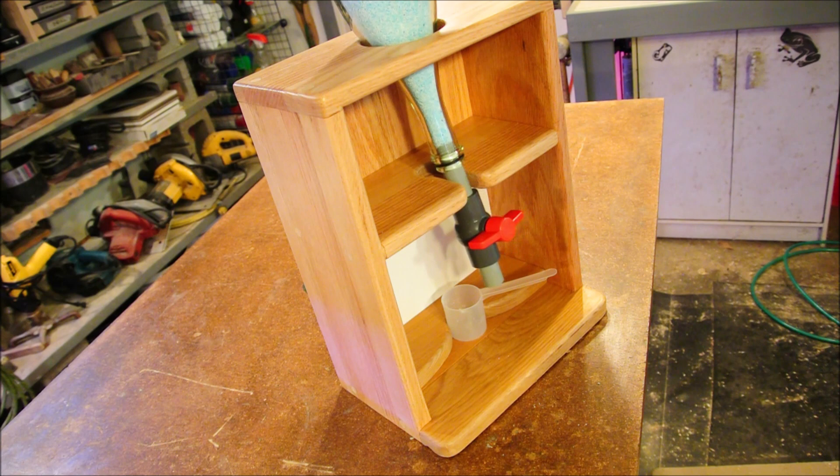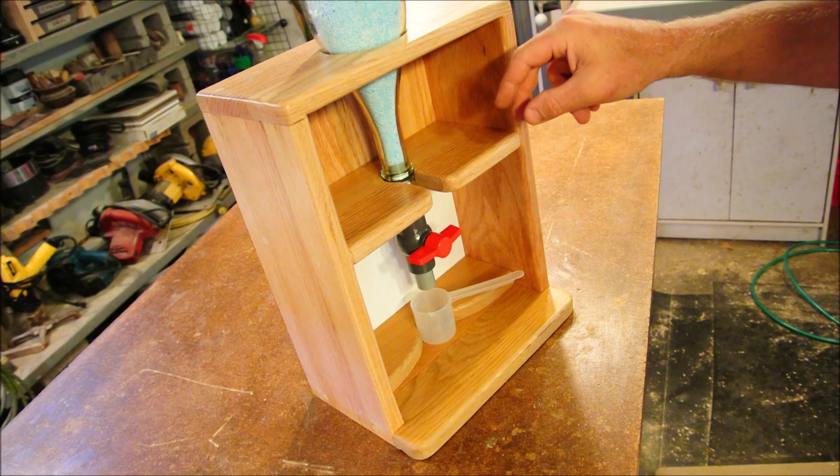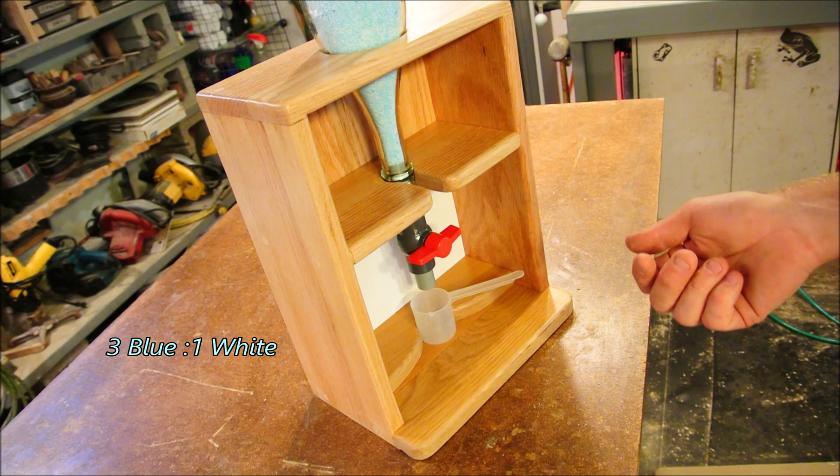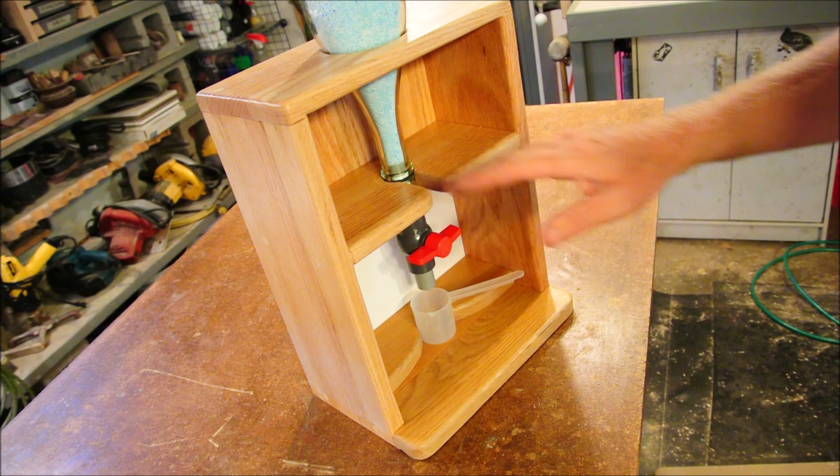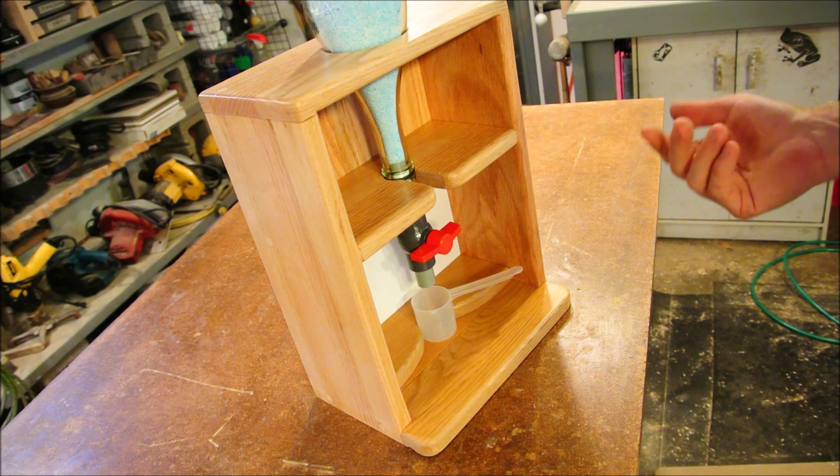Now, why did I even want to do this in the first place? Well, because there are two different types of powdered soap. Let's call them blue and white. And Mrs. Pocket likes the properties of blue and white for different reasons, and so she mixes them at a 3 to 1 ratio. And that gives her the formulation that has the properties that she wants. And if you're not using powdered soap, well, then you ought to be, because liquid soap is just not economical. And when you have something like this, it makes it really easy.